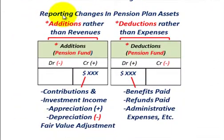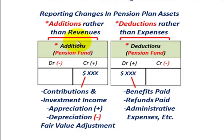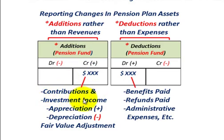When reporting changes in pension plan assets, the key is the account titles — I'm just showing them in T-account form here. Normally in governmental accounting we'd report revenues for any increases received, but when talking about the pension trust fund, we use the term 'additions' rather than 'revenues.' Additions would include contributions and investment income, and also any appreciation or depreciation in the investments account — that's the fair value adjustment for appreciation or depreciation in your investments.